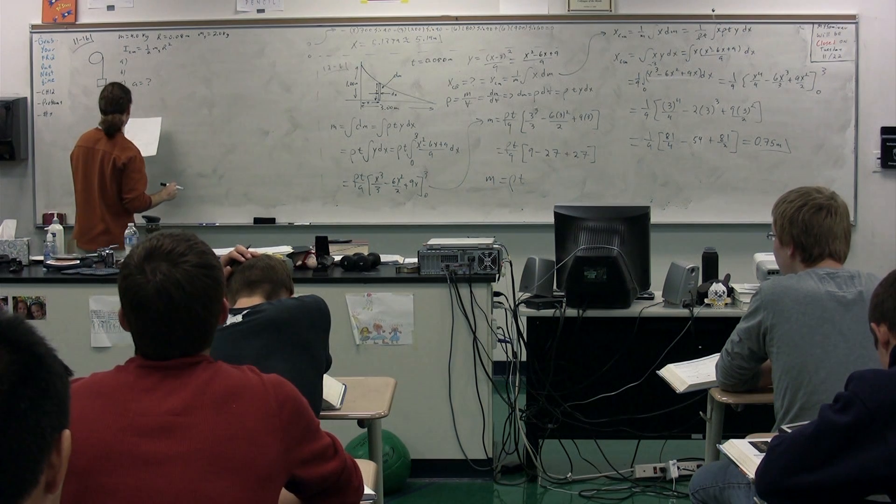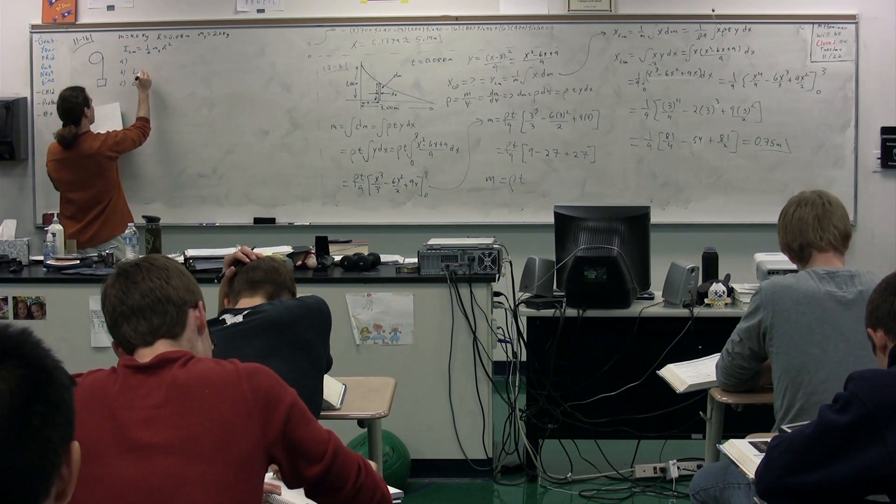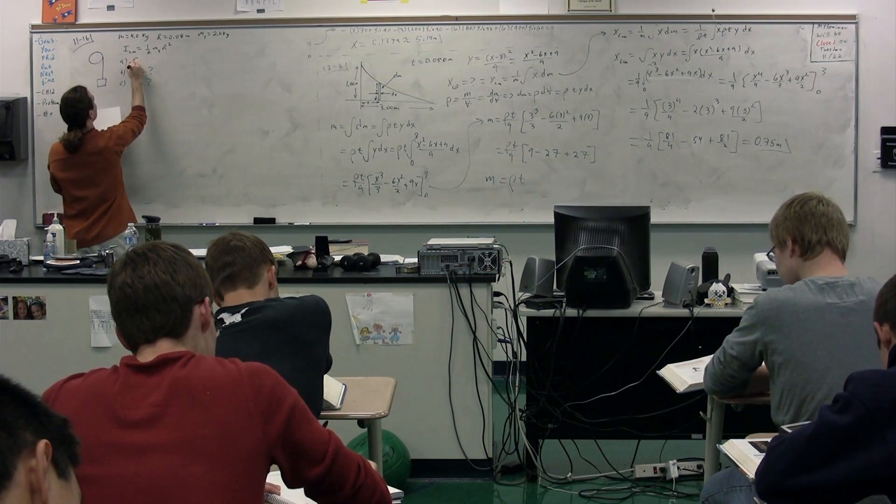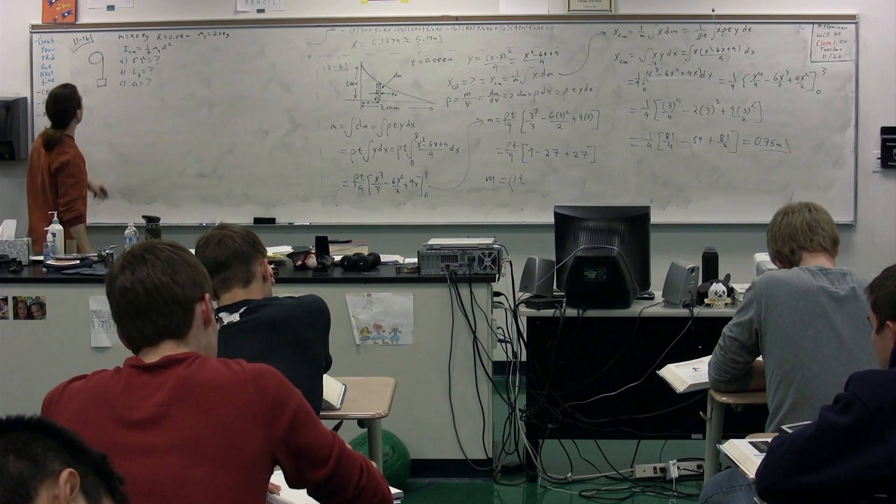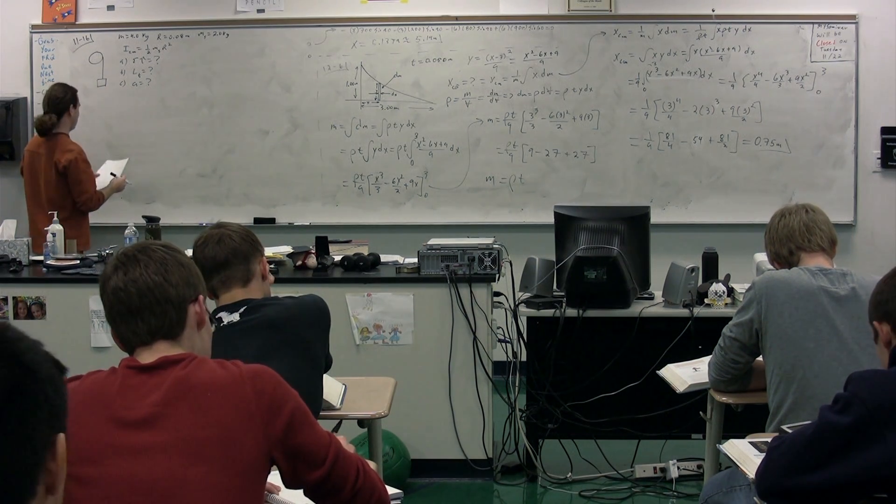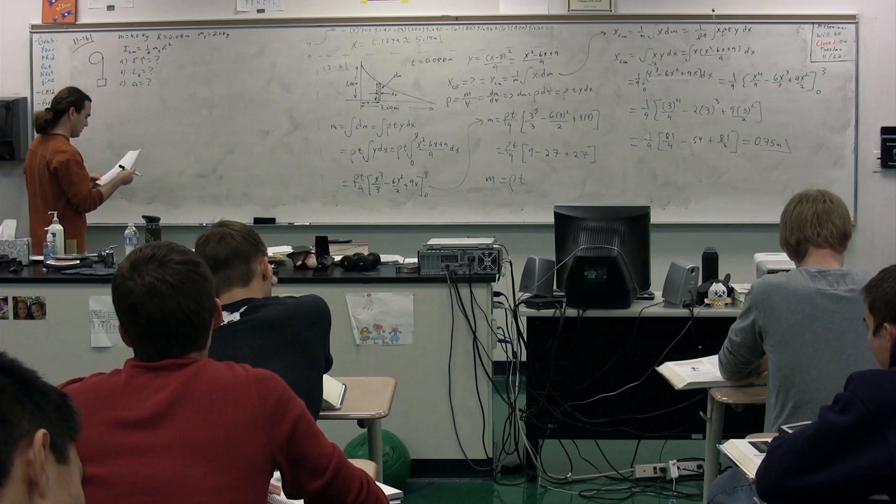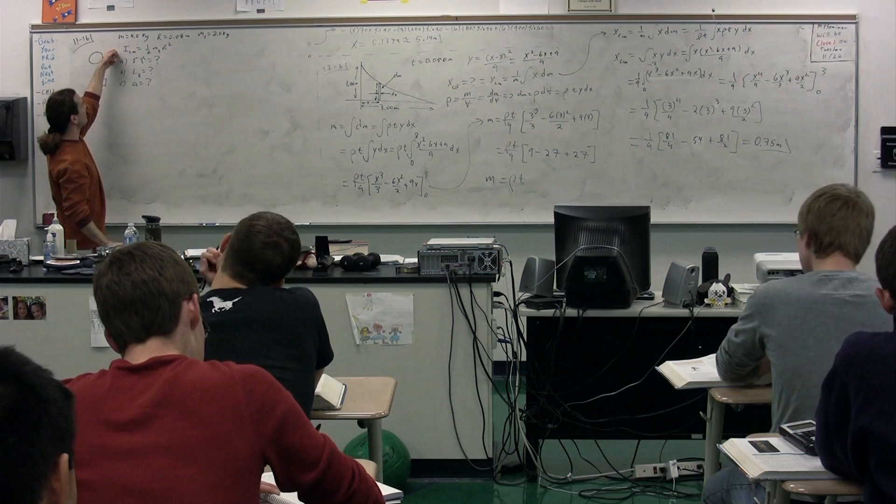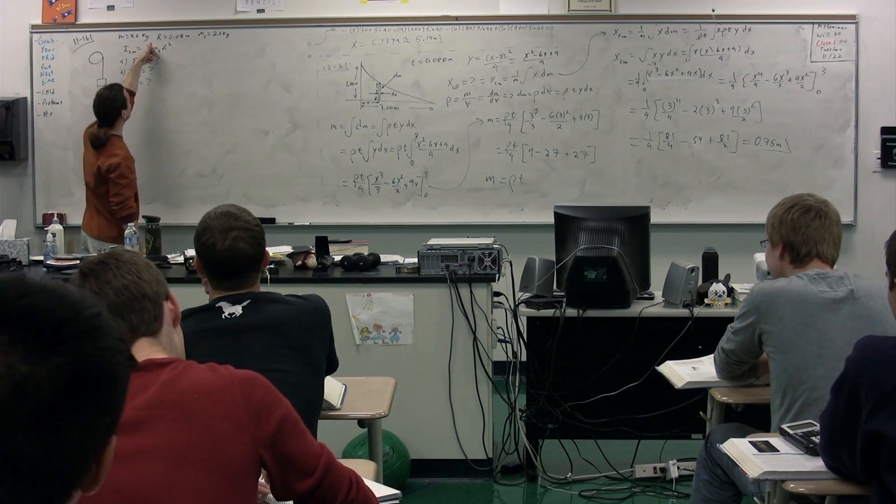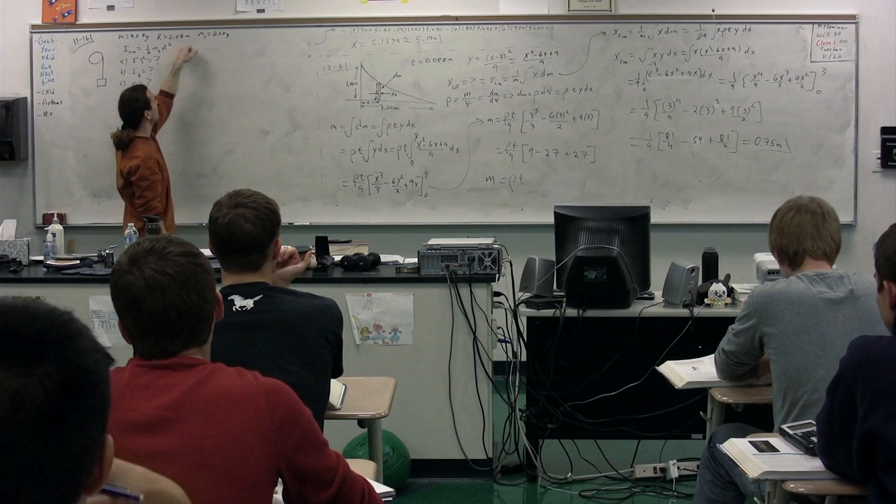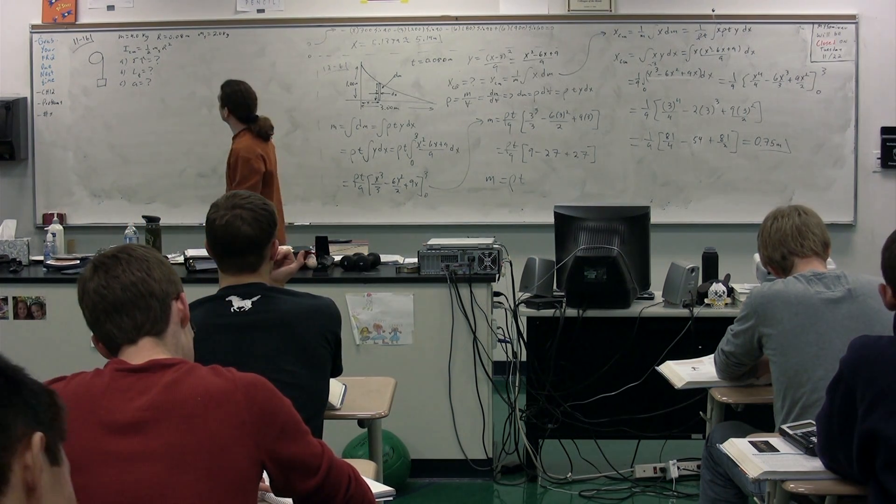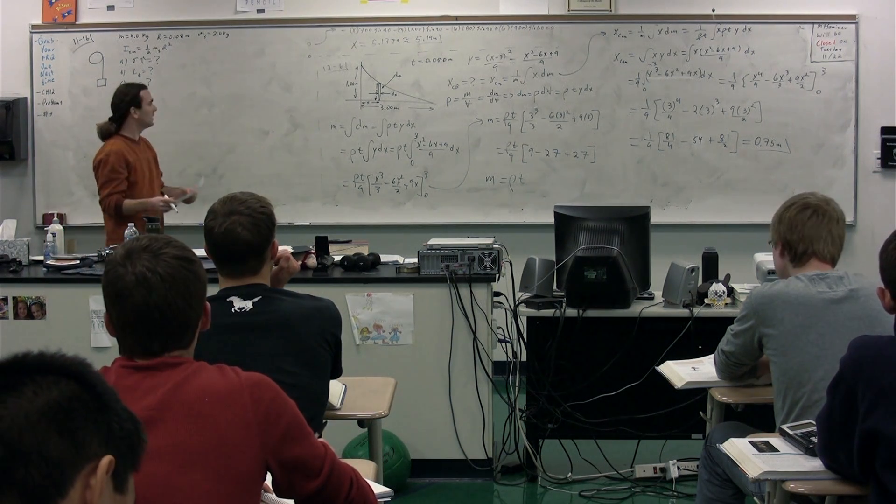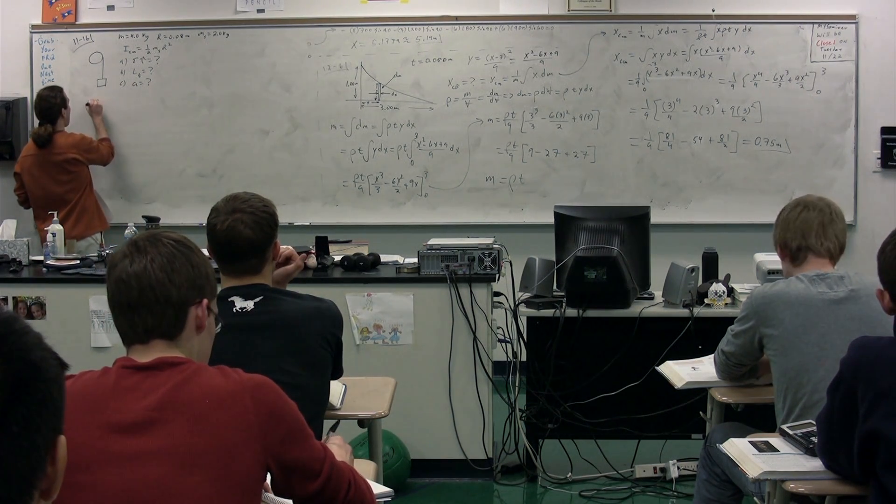We're looking for the acceleration in Part C, the angular momentum total in Part B, and the net torque on the system in Part A. We know the mass of the counterweight M is this guy right here. We have the radius of the wheel, which is a solid disk, with moment of inertia one-half mass times radius squared. And we know the mass of the solid disk is 2.0 kilograms.